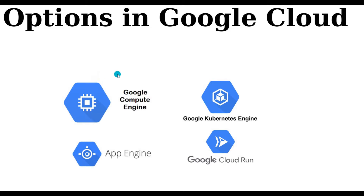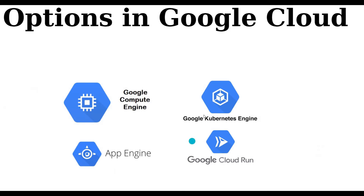We can deploy our Python Flask application on Google Compute Engine, which is a VM or virtual machine in Google Cloud. We can also deploy on App Engine, where we don't need to manage any kind of infrastructure — you just worry about your code. If your application is complex with multiple microservices, you can use Google Kubernetes Engine, and if your application is in container form, you can deploy it on Google Cloud Run.